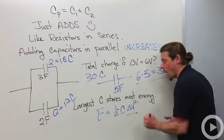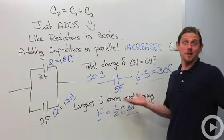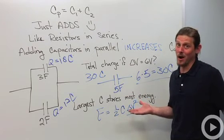So we say energy equals 1 half C delta V squared. This is constant. So the biggest C, biggest energy. And that's the way that capacitors add in parallel.